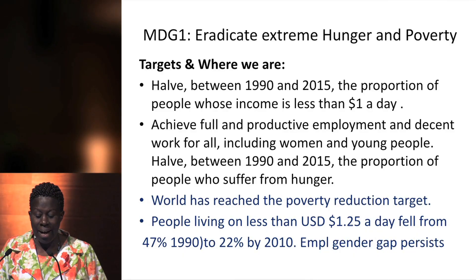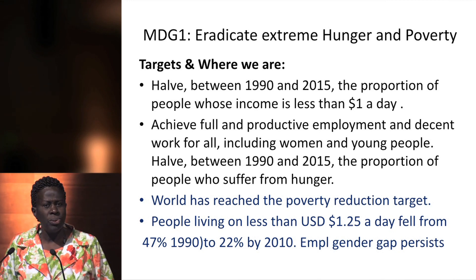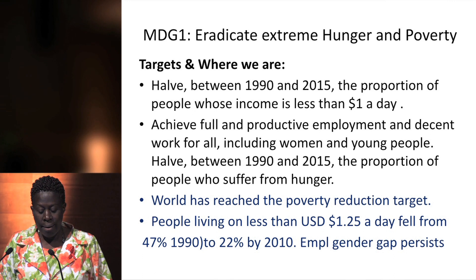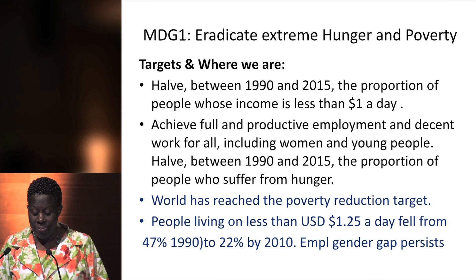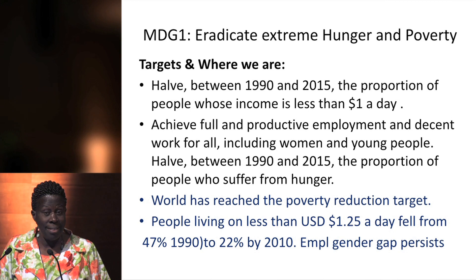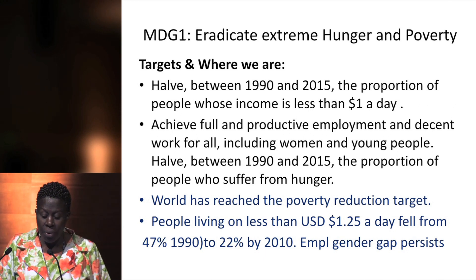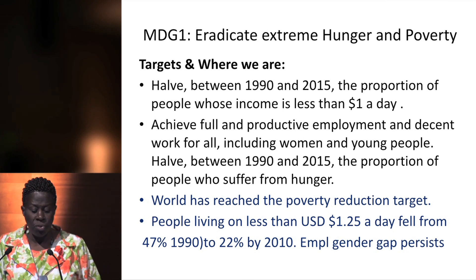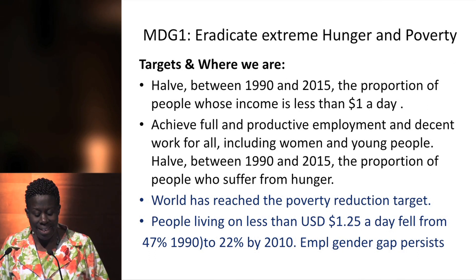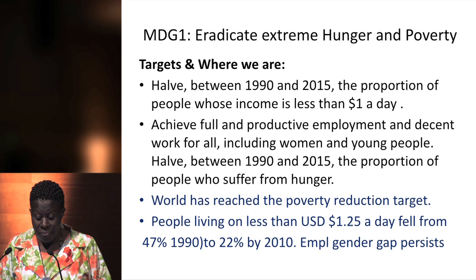We are going to look briefly at what the targets were and where we stand. The first goal was to eradicate extreme hunger and poverty. Between 1990 and 2015, the targets included halving the proportion of people whose income is less than one dollar per day, achieving full and productive employment and decent work for all — including women and young people — and halving the proportion who suffer from hunger. The 2013 report tells us that the world has reached the poverty reduction target.